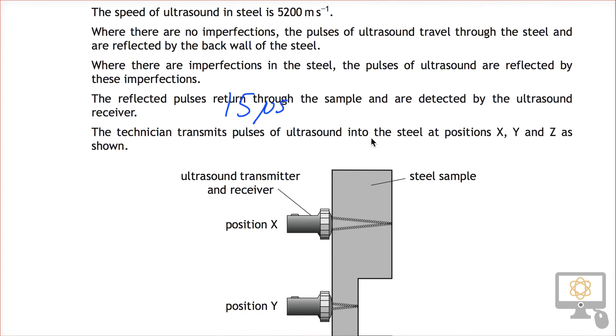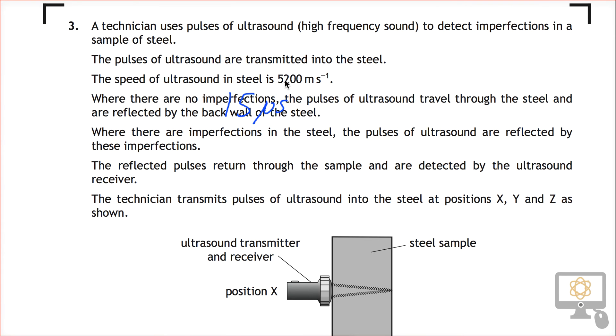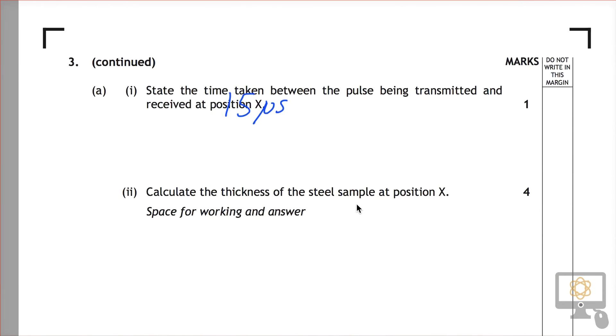Do we know the speed of this signal? Yes we do, it's 5200 meters per second and we know it travels at that speed along and back again. So if we know the speed and the time it's traveling, we can work out the distance it's traveled.